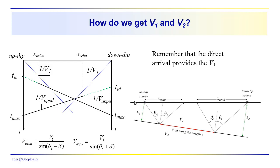We didn't actually solve for the critical distance, but we noted schematically that when the source is in the up-dip location, the first critically refracted ray reaches the surface at a shorter distance from the source compared to when the source is down-dip. It takes a greater distance from the source to reach the point of first critical refraction when shooting down-dip. This is shown in the diagram plotting both forward and reverse refraction profiling data together — the critical distance is greater when the source is down-dip.